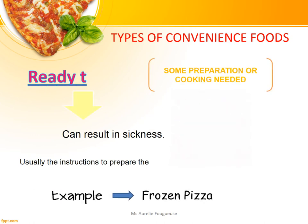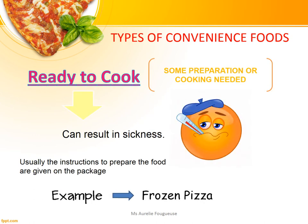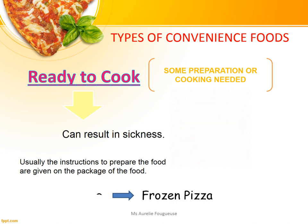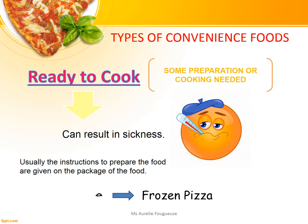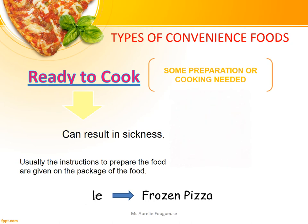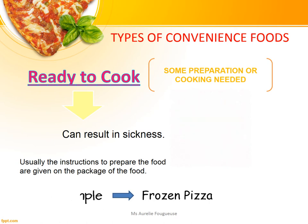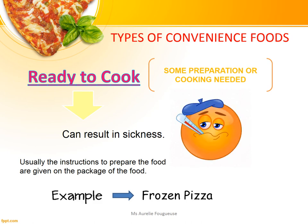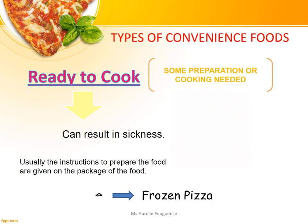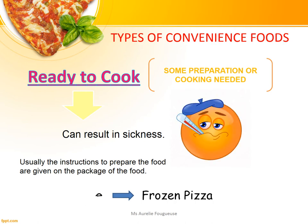Ready-to-cook foods means that the food needs some preparation or cooking, otherwise it can make you sick. Another important information about this type of Convenience Food is that the instructions to prepare or cook the food are usually given on the package. An example of ready-to-cook food is frozen pizza.